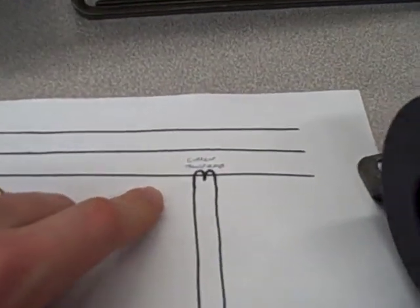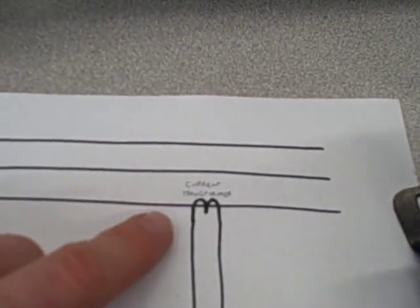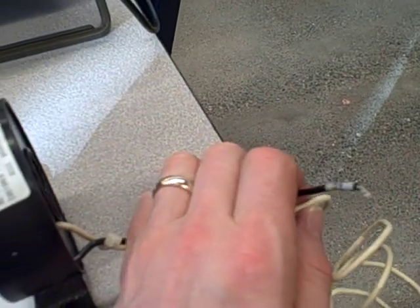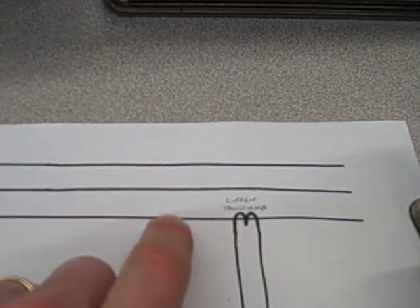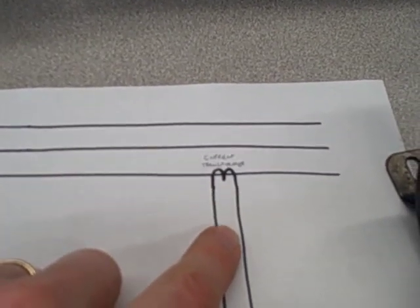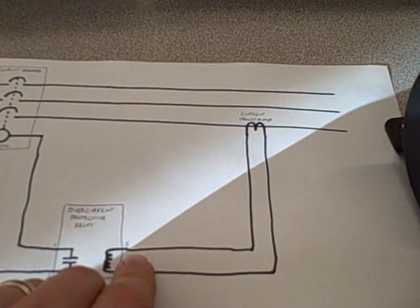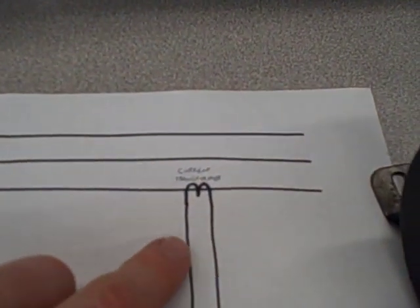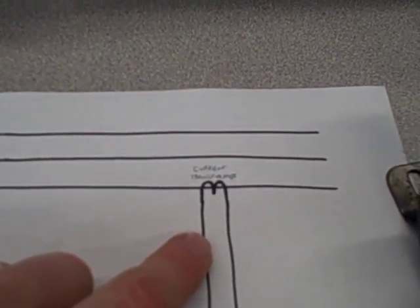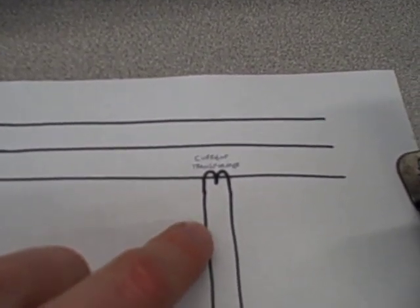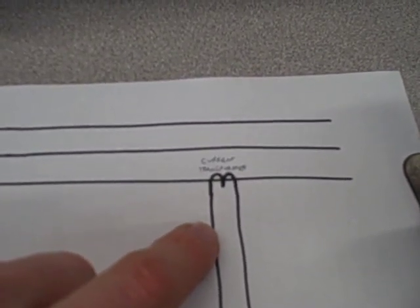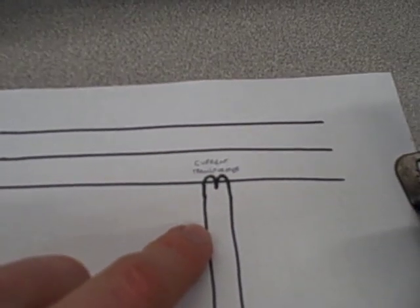Now there's a very important caveat when you're using current transformers. And that is you never, ever, ever want to open circuit the secondary winding. Because acting as a current transformer, with current going through the power line, this transformer tends to act as a current source to anything it's connected to. Hence, if I open up any of these wires here, it's going to try to push the amount of current that it's rated for through that open. And if that open is an air gap, it will arc across that air gap.